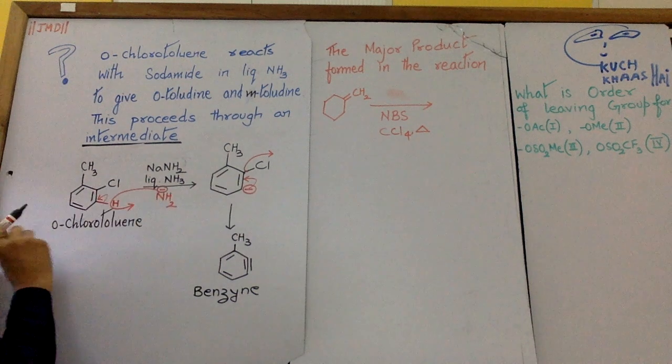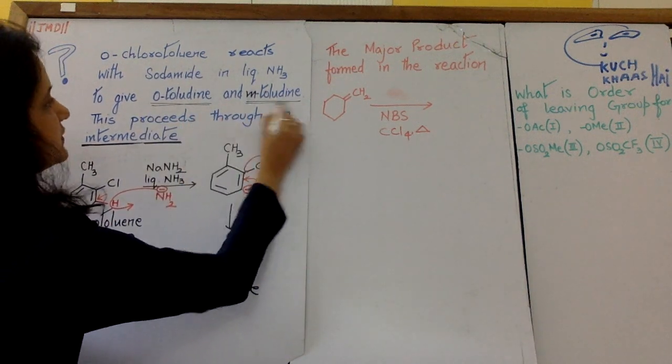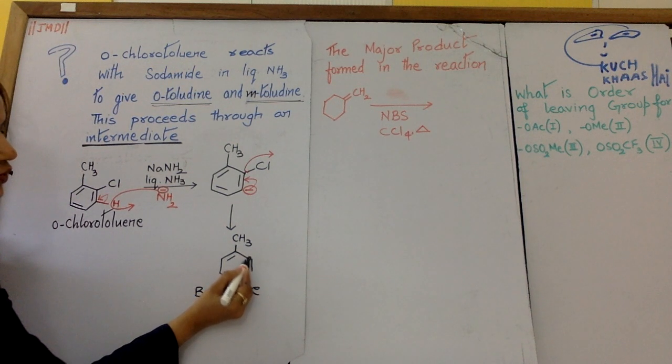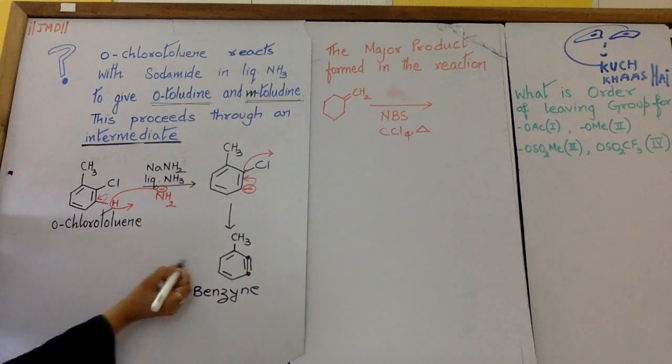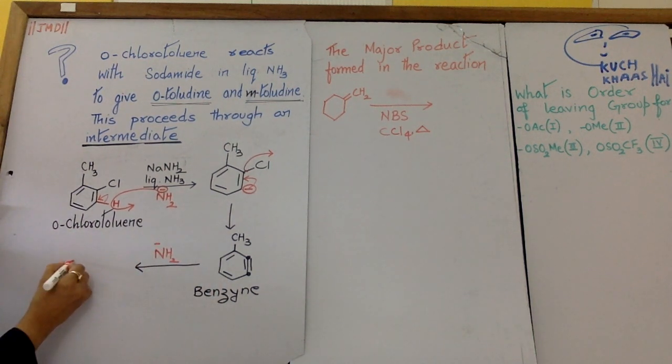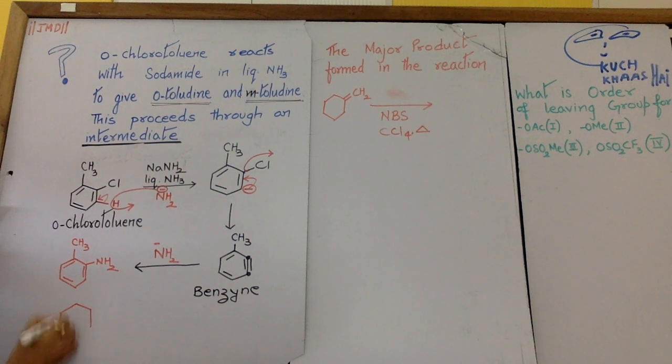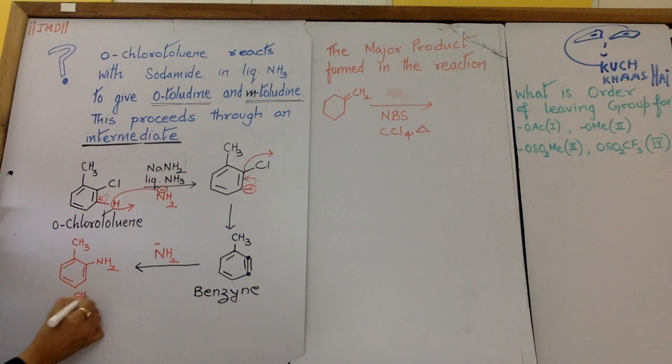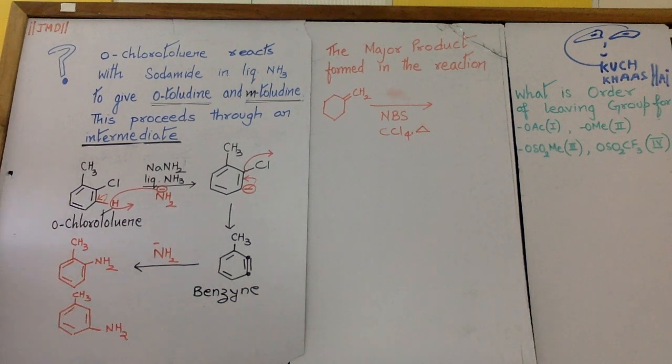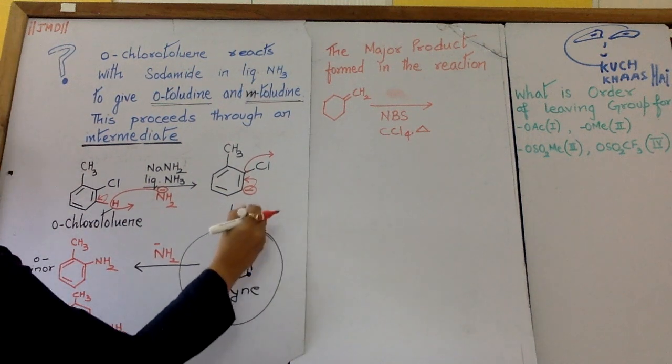Now only one thing which comes into mind is why we cannot move this bond here. That is what the entire question is about. O-toluidine and M-toluidine. So only in this position you can get O-toluidine or M-toluidine when finally NH2 reacts. So you get O-toluidine like this or you get M-toluidine like this. Obviously the major product is meta. Meta is major, ortho is minor. So the intermediate is this. So this is our answer.